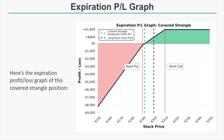Below $190, the profit and loss graph gets steeper because at any price below $190 we're effectively long 200 shares of stock. At expiration, if the short put is in the money, its position delta is +100, and our long stock delta is also +100, so we lose $200 for every $1 decrease in the stock price.